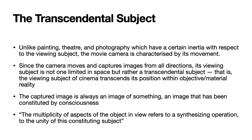The viewing subject of cinema transcends its position within objective or material reality. Even though the eye of the camera is similar to the eye of the viewing subject, because of technology the eye of the camera can capture a lot of things which the eye of the subject cannot. This may be certain angles — you capture the same object from different angles, including some angles that may not be accessible to a real person. For example, drone shots from far above are not something a viewing subject can normally have, but it is something facilitated by technology.